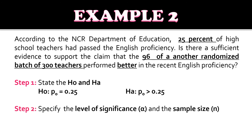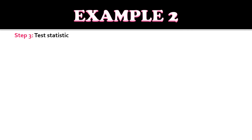For step two, we specify the level of significance and sample size. The sample proportion is 96 over 300, giving 0.32. Alpha equals 0.05 and sample size equals 300 — the same alpha is used since this problem is related to example one. For step three, we use the Z-test for proportion, one-tailed, right-tailed.